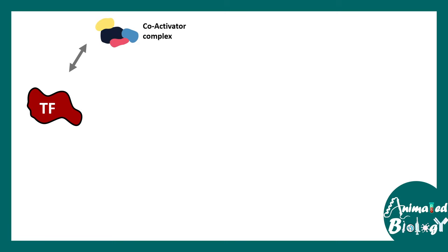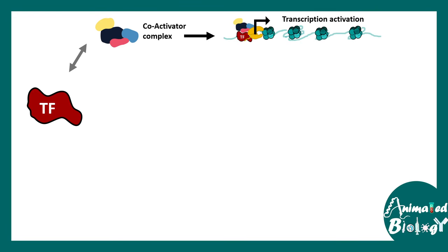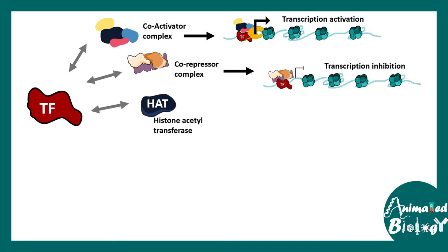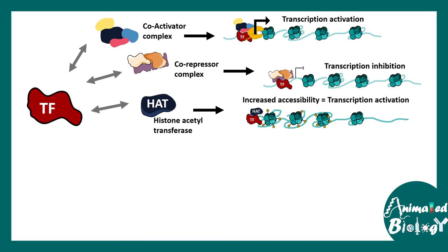Transcription factors can interact with many partners, giving rise to effects on transcription. For example, if transcription factors interact with a co-activator complex, it results in transcription activation. In a context-dependent fashion, they can interact with a co-repressor complex, which may lead to transcription repression. They can also interact with histone acetyltransferases, leading to acetylation of specific histones along the nucleosomes on the gene body, which increases accessibility and the chance of transcription.